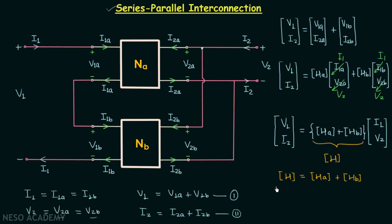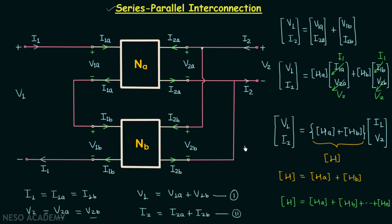Therefore, the H-parameter matrix of the overall network equals HA plus HB. This is our final result. If we connect N two-port networks in series-parallel interconnection, the overall H-parameter matrix equals the sum of the H-parameter matrices of all individual networks: H1 plus H2 all the way to HN. That is all for this lecture; if you have any doubts, you may ask in the comment section.